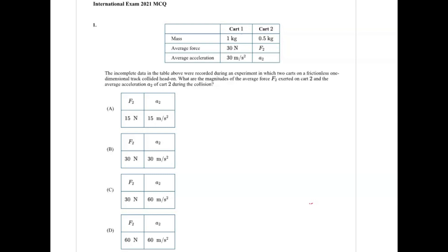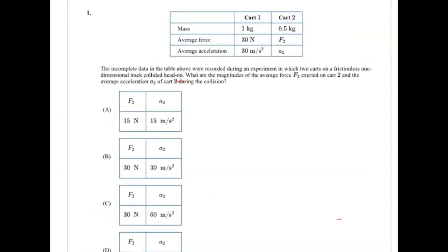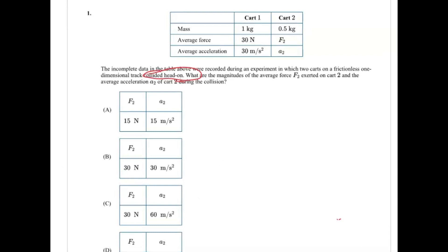Alright, so question 1 states, the incomplete data in the table above was recorded during an experiment in which two carts are set on a frictionless, one-dimensional track and they collide head-on. What are the magnitudes of the average force exerted on cart 2 and the average acceleration of cart 2 after the collision?